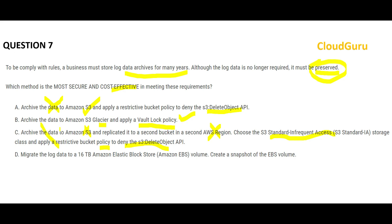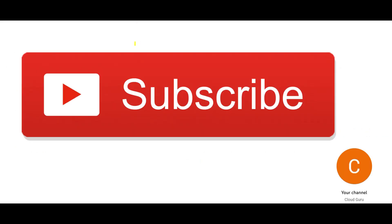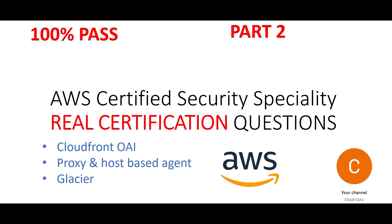Option D suggests moving data to EBS volumes, which are even more expensive than S3, plus maintaining snapshots adds further cost. So option B with S3 Glacier and Vault Lock is my final answer. Please hit the subscribe and like buttons — I'll be posting more informative content to help you clear these certifications. Don't forget to visit other playlists on this channel dedicated to AWS, Azure, and GCP certifications.